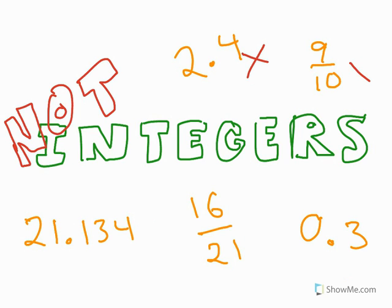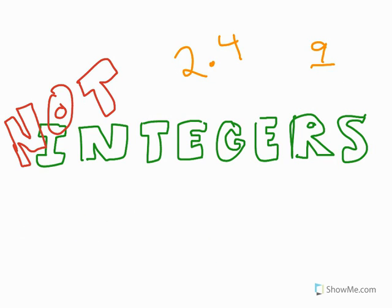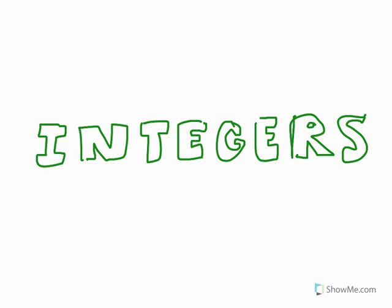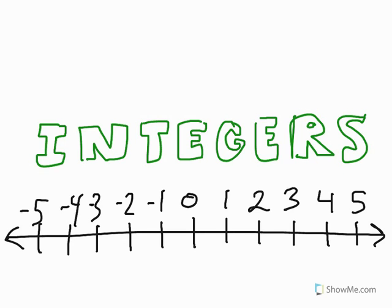A lot of times when we're talking about integers, we use something called a number line. It looks something like this,